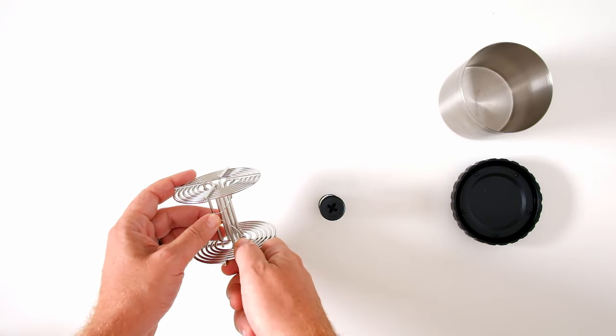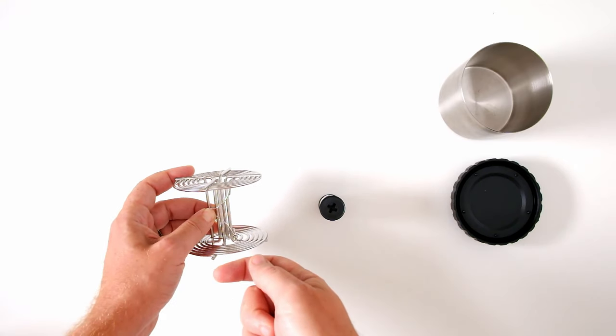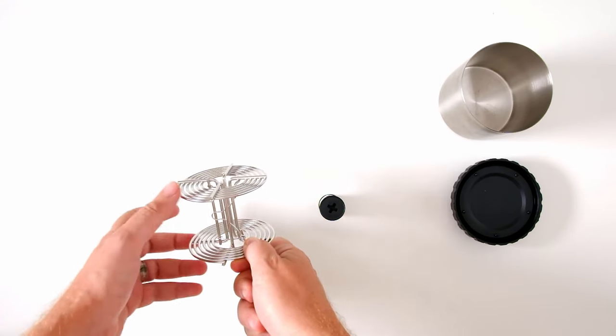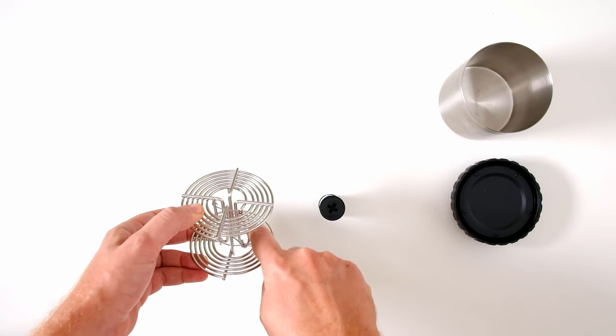And this spring clip is going to hold your film. Now these clips might look a little different on different reels, but the track is always going to look the same. So check the track, make sure it's going counterclockwise.